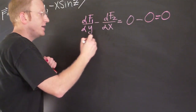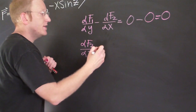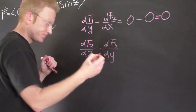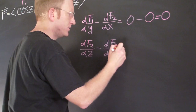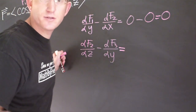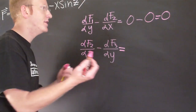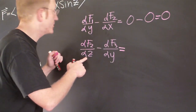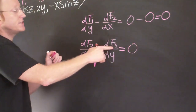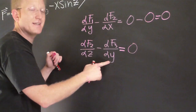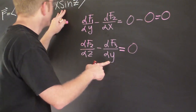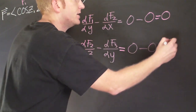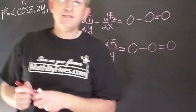Now looking at the partial of f2 with respect to z — that should be the same as the partial of f3 with respect to y. If these are the same, the mixed partials of my potential function are equal. My f2 is 2y; taking the derivative with respect to z gives zero. Taking the derivative of f3 with respect to y — my f3 is x sin z — and since there's no y, that's also zero. So now we only have one set of mixed partials left to check.